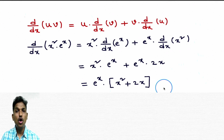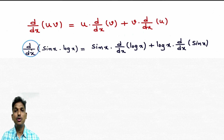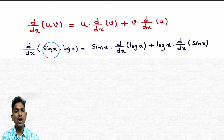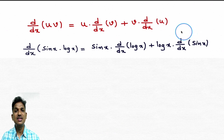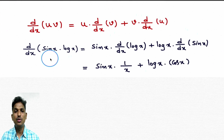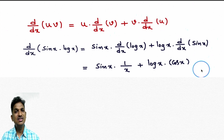One more problem on the product rule: d/dx of (sin x into log x). There is a product of two functions — sin x is u, log x is v. Applying the formula: sin x into derivative of log x plus log x into derivative of sin x. That equals sin x into 1/x plus log x into cos x. This differentiation is complete.